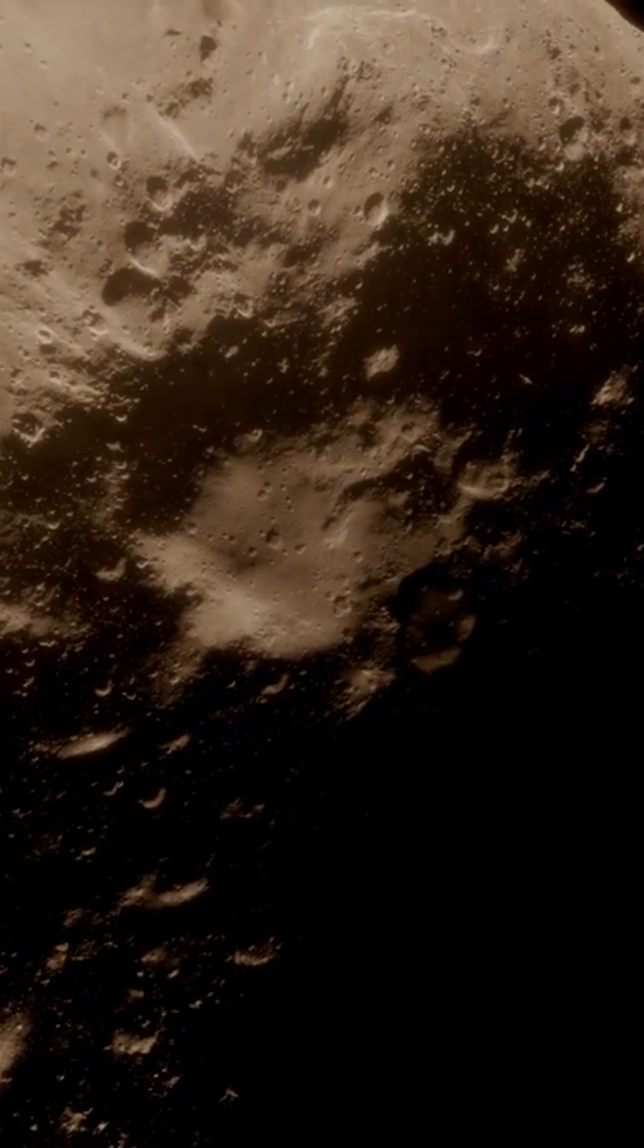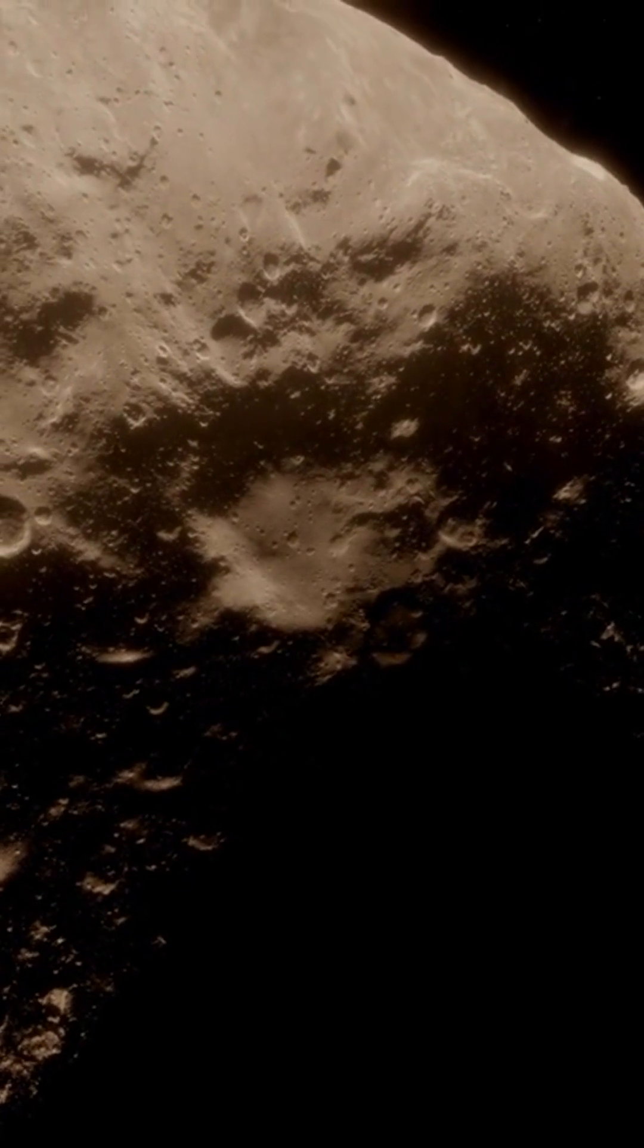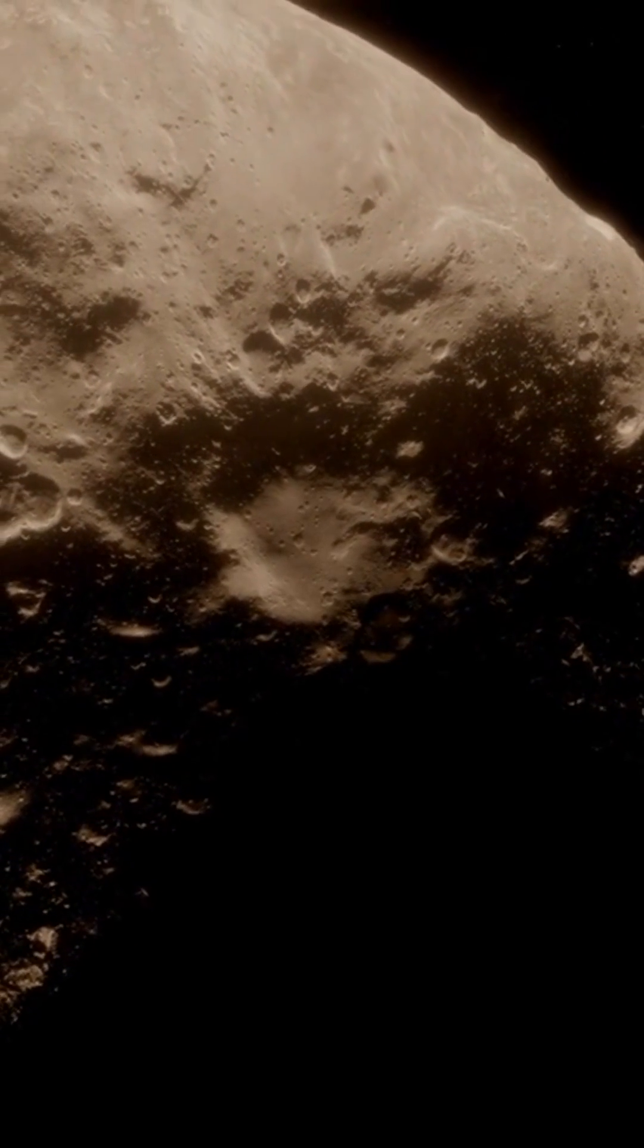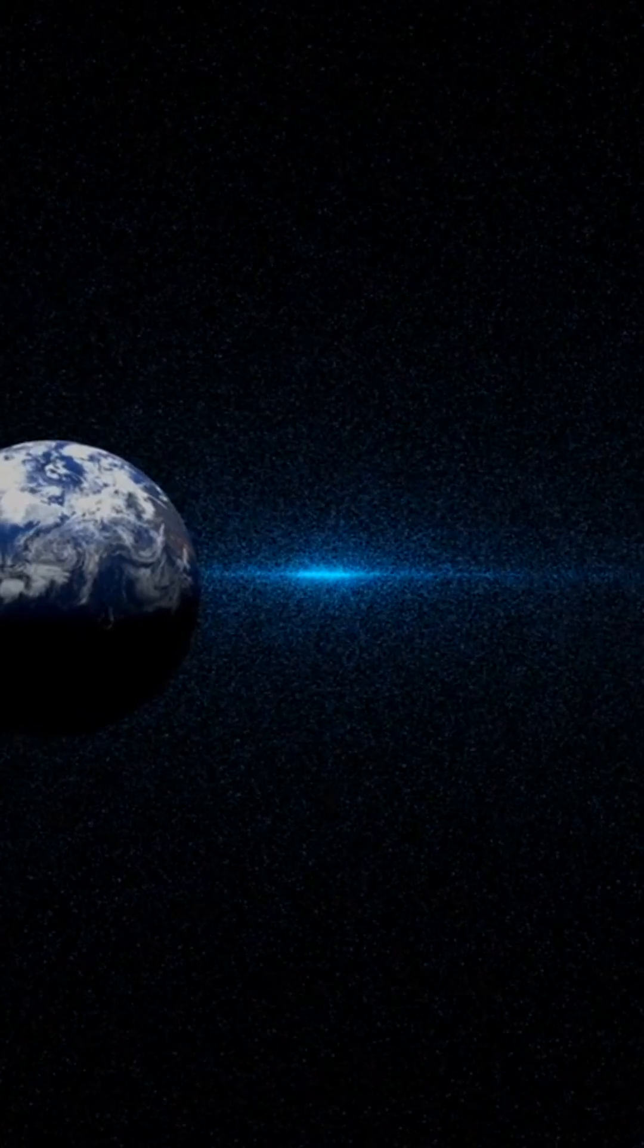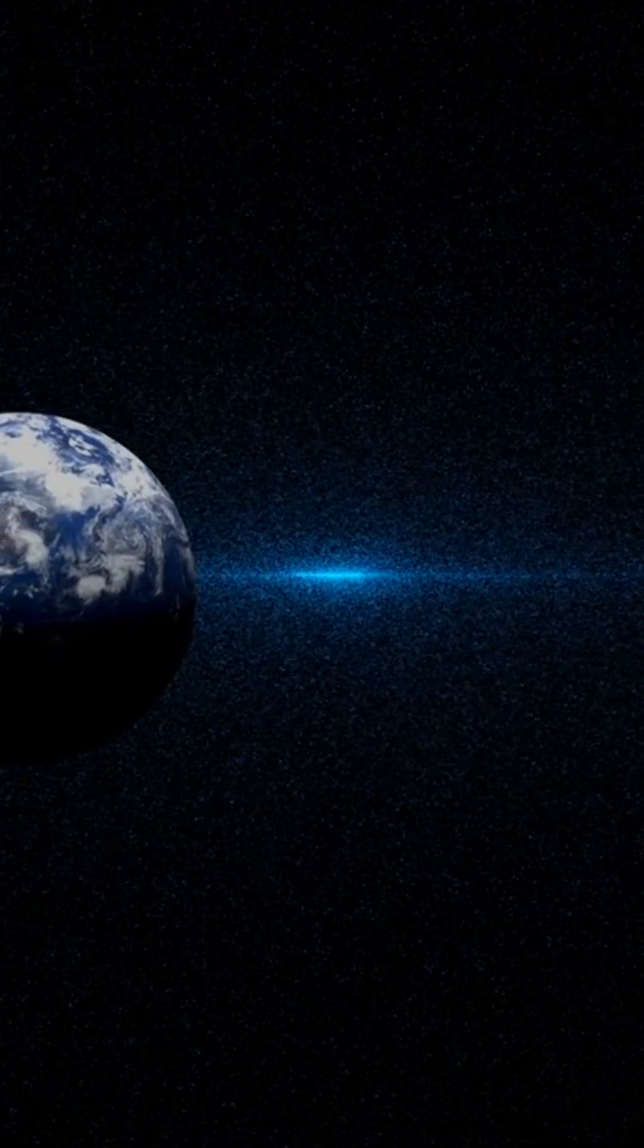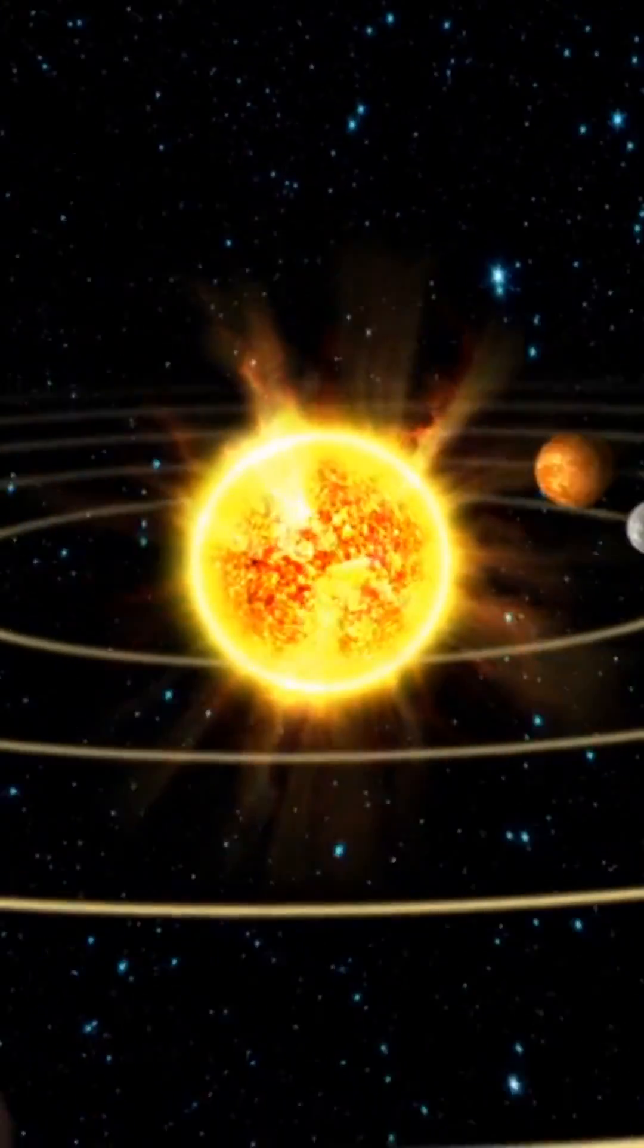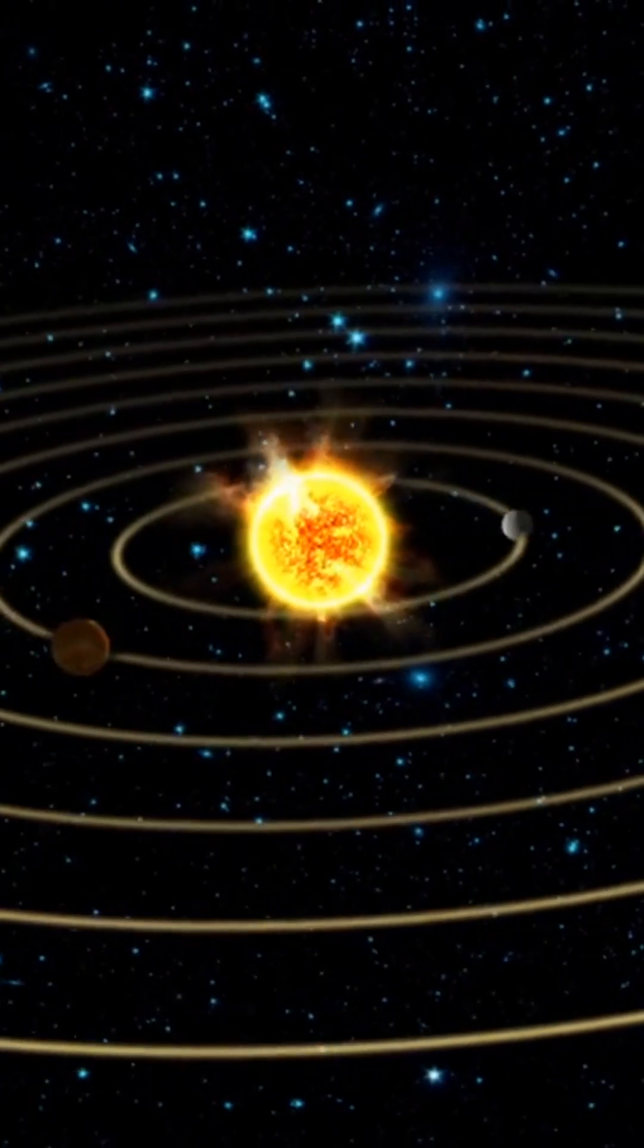Imagine embarking on a journey beyond our humble blue planet, zooming past our neighboring planets and witnessing the mesmerizing dance of asteroids in our asteroid belt. We traverse the vast expanse of the Kuiper belt, home to a plethora of icy bodies and dwarf planets. Our voyage takes us further into the uncharted realms of the Oort Cloud, a vast shell of comets and icy objects encircling our solar system.